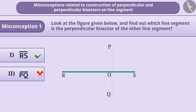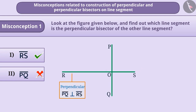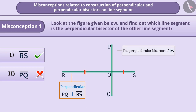Line segment PQ is perpendicular to line segment RS, but it doesn't divide line segment RS into two equal parts. Therefore, we cannot call line segment PQ the perpendicular bisector of line segment RS.